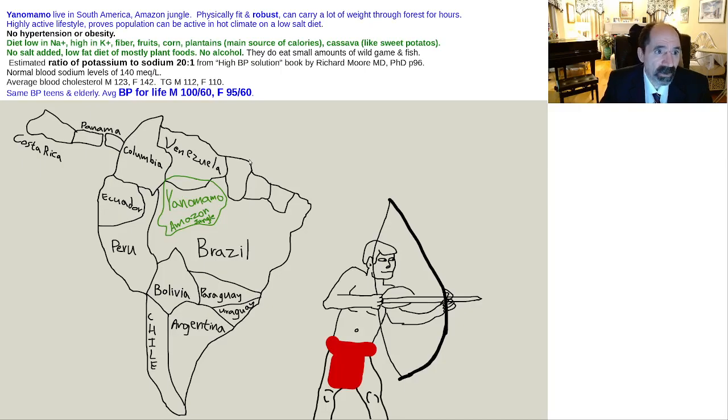In addition, their body weight doesn't change. If you're eating a healthy diet, your body weight should be about the same as a teenager, as it is all the way through middle age and later years. There was no obesity in their population, no hypertension in their population. So that's pretty interesting for the Yanomamo.